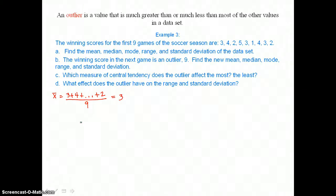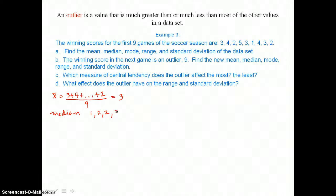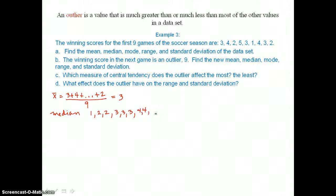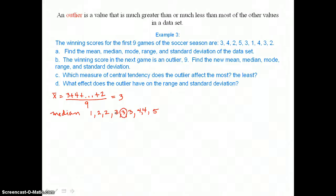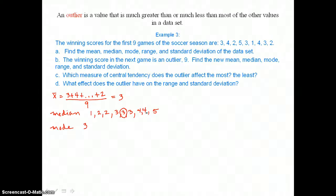For the median, since the scores are not in order, we put them in order: 1, then two 2's, then three 3's, then two 4's, and a 5 — all 9 scores. Since there's an odd number, 3 is the number in the middle with 4 scores on either side, so our median is 3. The mode is also 3, because there are three 3's in our list — more than any other number.